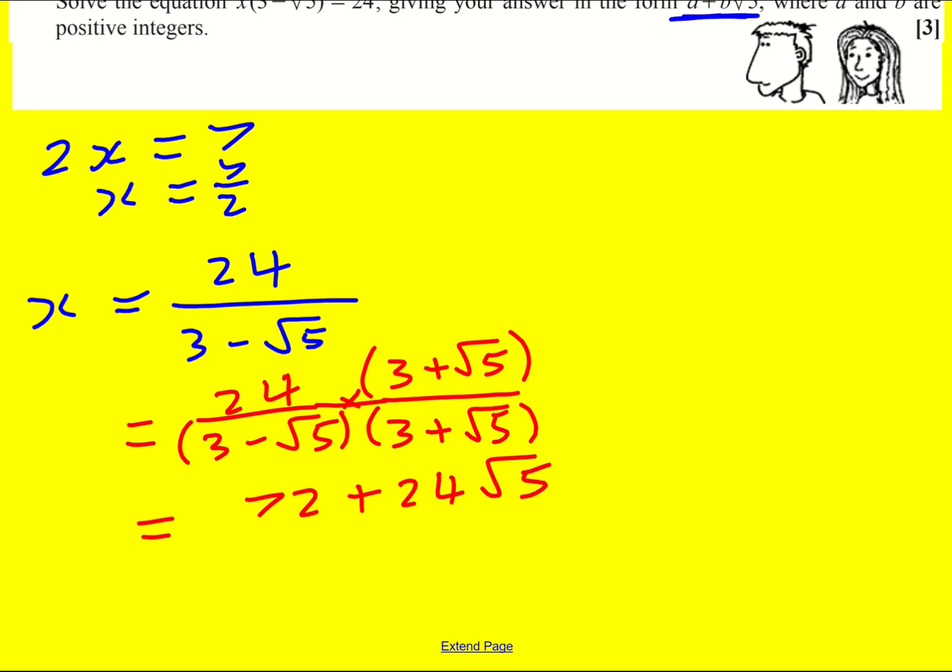Actually, it might make sense to not simplify it quite yet. I'm just going to leave it as 24 times 3 plus root 5, just in case there's any factors that cancel out with the 24.